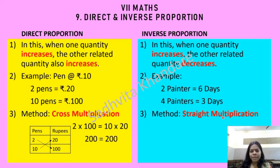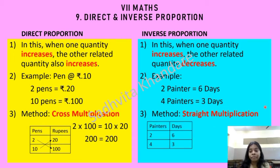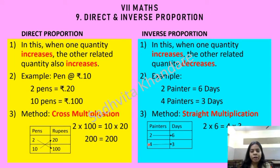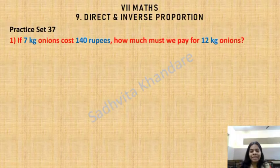For inverse proportion we use the straight multiplication method. We make a table of painters and days: 2 painters take 6 days and 4 painters take 3 days. We straight multiply: 2 into 6 equals 4 into 3 — both give 12. Here also we get the same answer on both sides after straight multiplication.